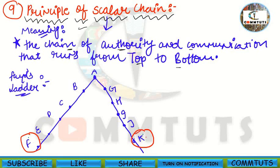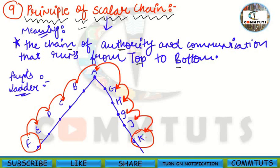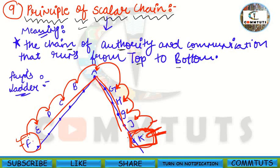For example, if employee F needs to communicate a message to employee K, F will first transfer the message to his immediate superior E, then E to D, D to C, C to B, B to A, then A tells G, G tells H, H tells I, I tells J, and finally the message reaches K. So if F has to get his message to K, he has to cross nine steps — nine posts.